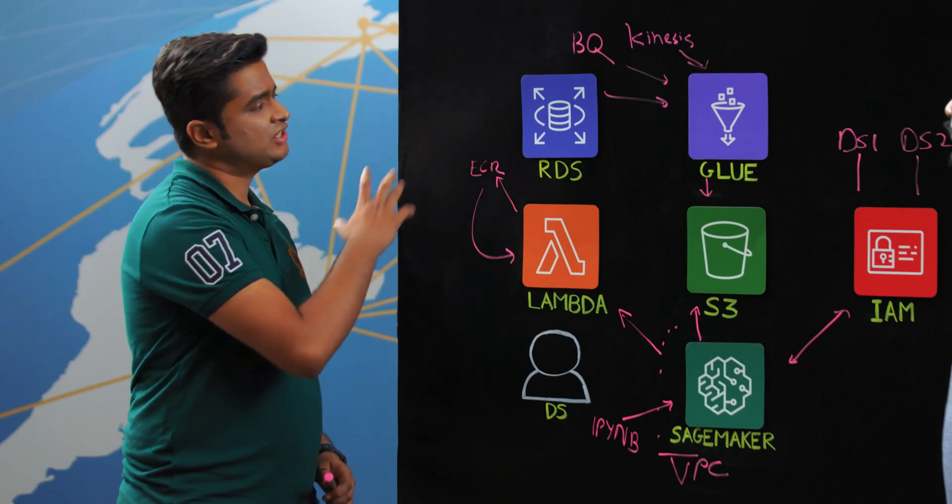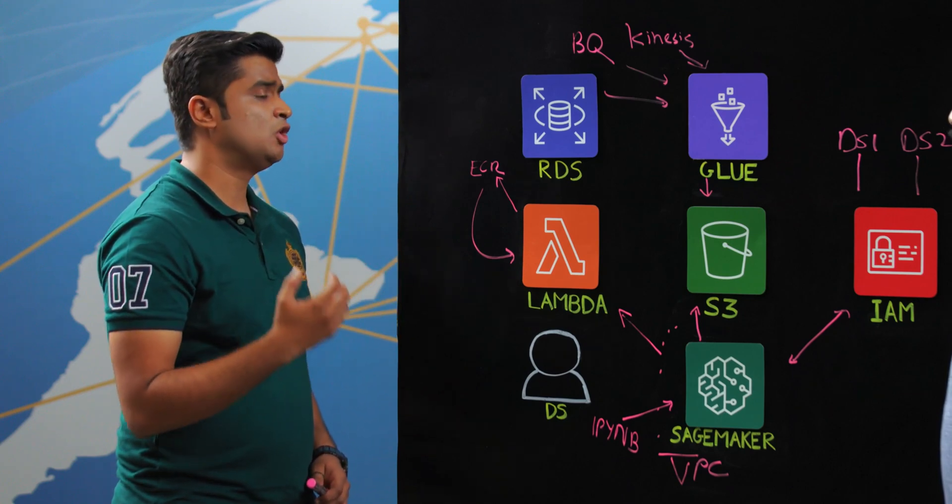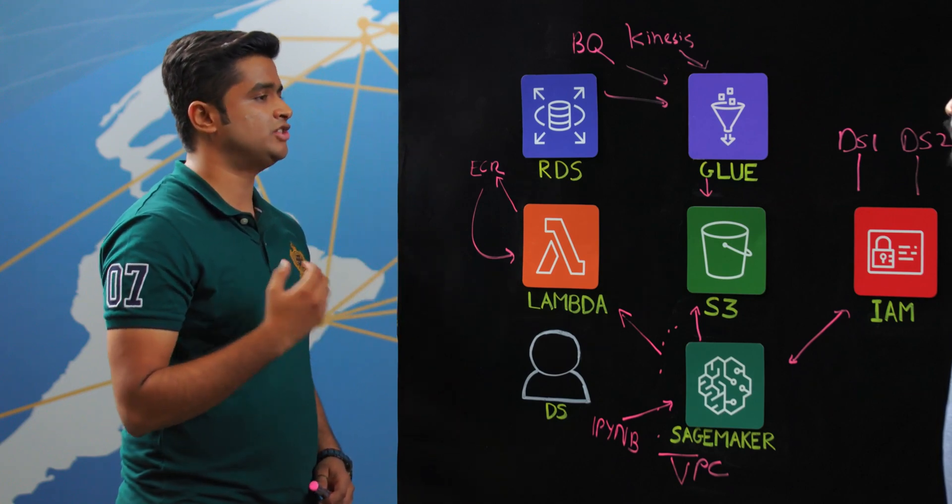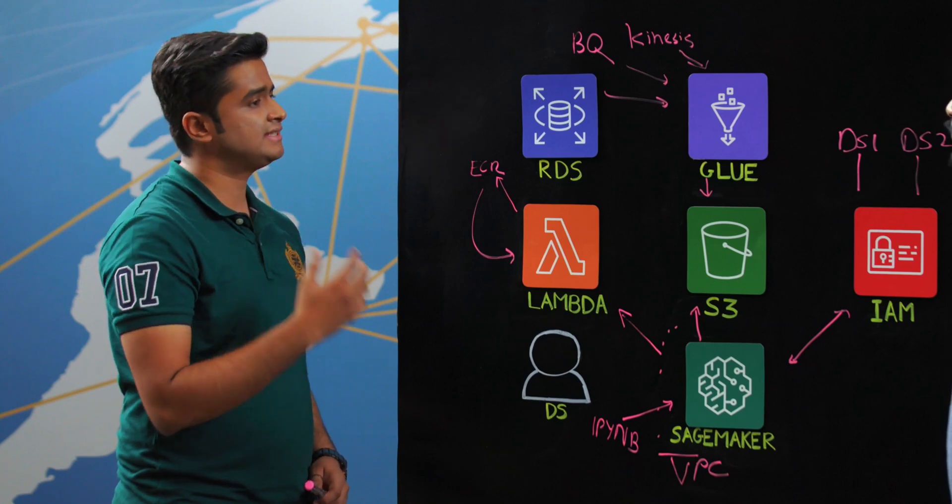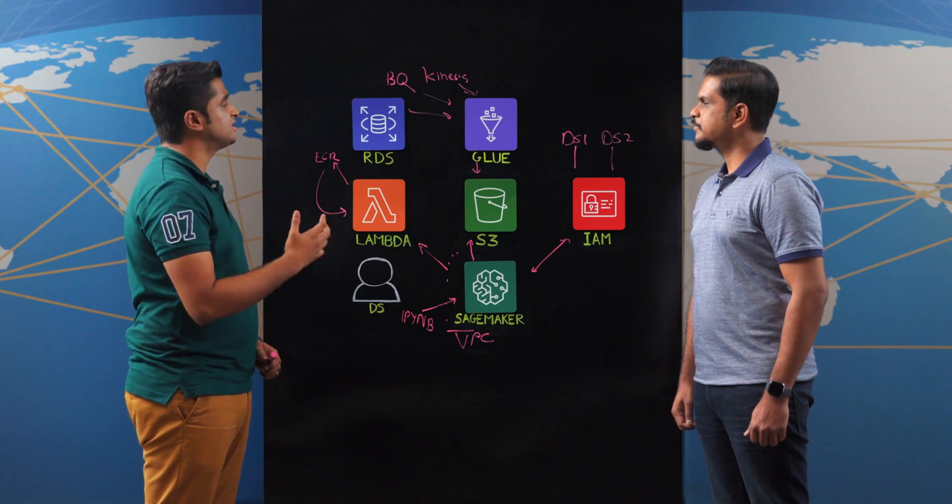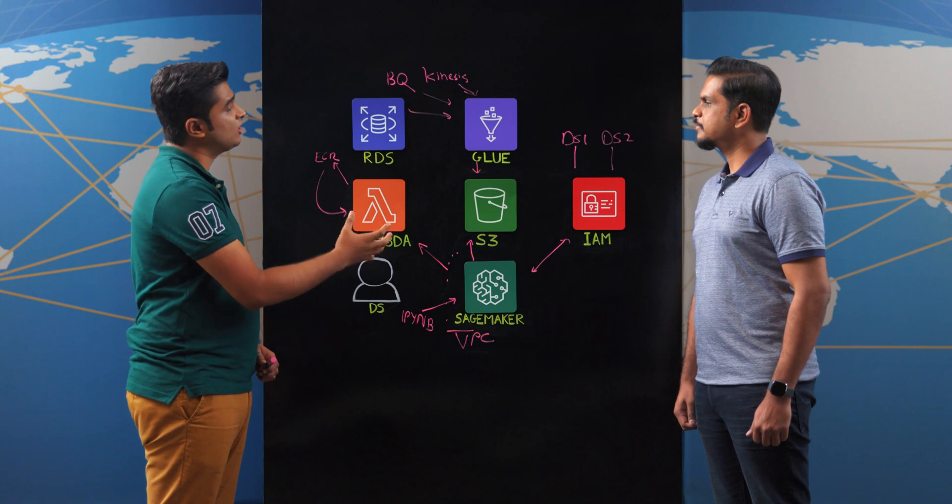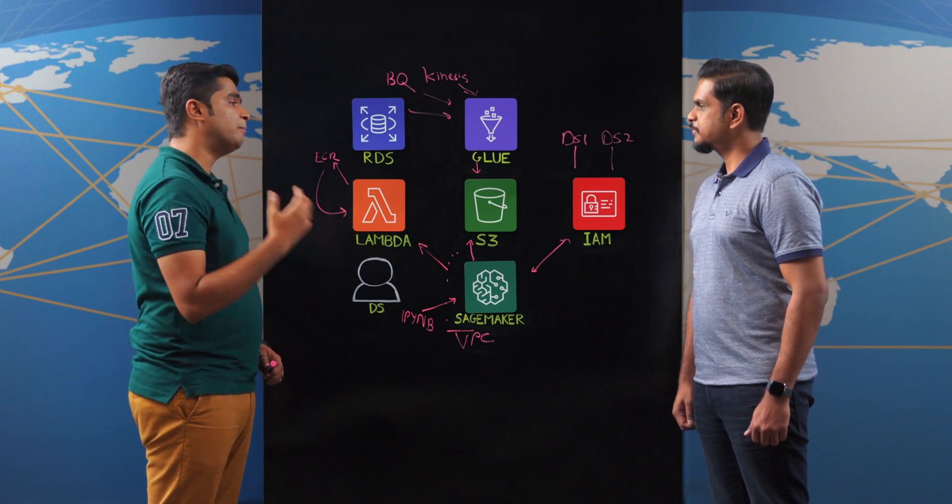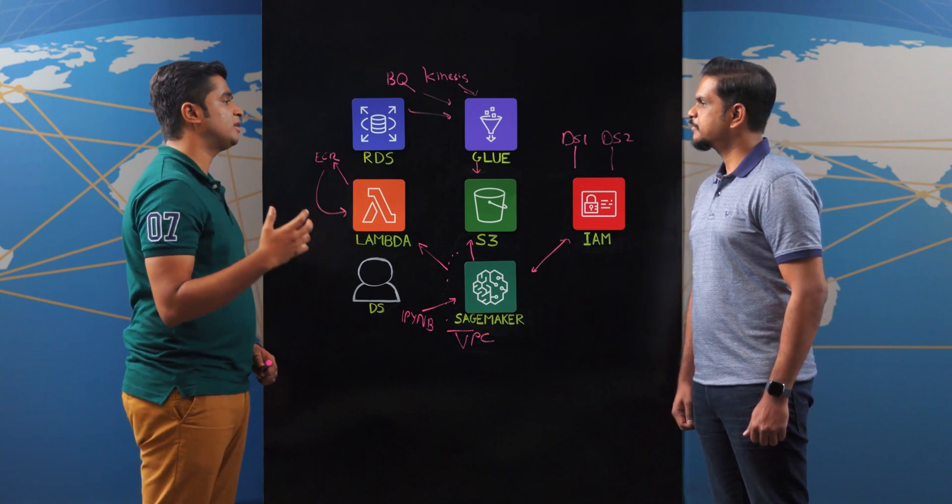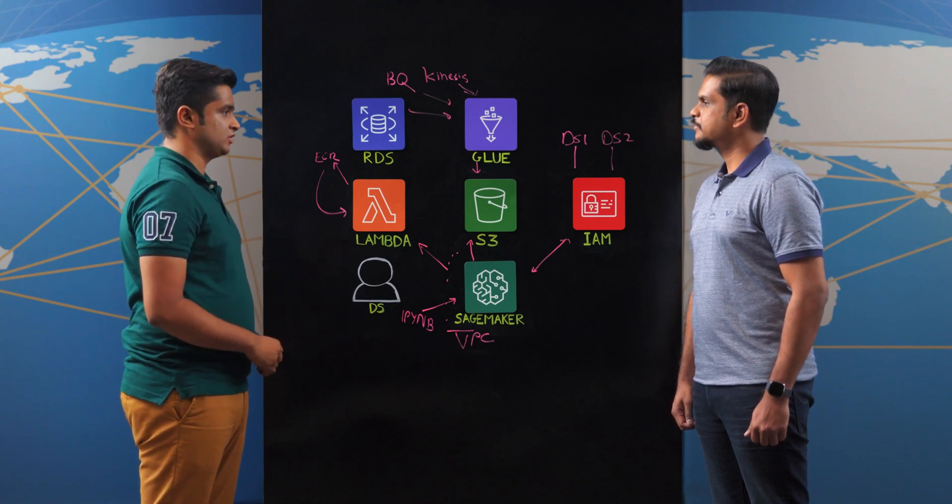This architecture allows us to run our notebooks as SageMaker processing jobs, which brings in much more required agility along with security, scale and on-demand infrastructure. We need not worry about instances because they are created and torn down on the fly. Moreover, this also comes with a UI that empowers our data scientists to run their data pipelines on production workloads without the help of any infrastructure engineer.